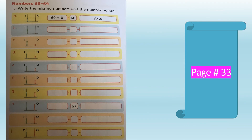Now turn to page 33, where we learn numbers from 60 to 69. Write the missing numbers and number names. In part A, there are zero beads in the ones rod and six green beads in the tens rod. Six tens means sixty plus zero ones, which makes sixty. The number name is S-I-X-T-Y, sixty.